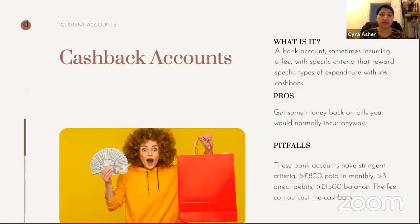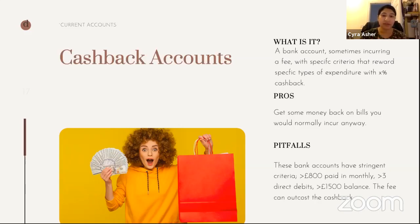Cashback accounts, also known as reward accounts, give you a certain percentage of your bills back as cashback. Santander 123 is an example — you get 1% back on a certain type of bill, 2% on another, 3% on others. It's great because you get money back, but the problem is they have really strict rules. You have to have a certain amount paid in per month, a certain number of direct debits coming out, and a certain balance level. If you don't meet all three rules, you don't get your cashback. So it's worth checking whether you can meet those rules month in, month out.